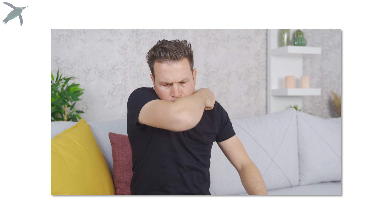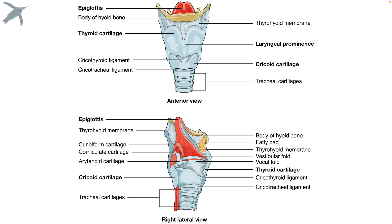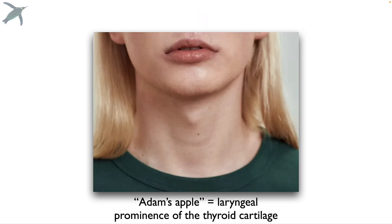If anything other than air enters the larynx, you get a cough reflex. The larynx itself is a complex structure, and as you can see, it's really well supported by cartilage. This is the thyroid cartilage, which most people call the Adam's apple.